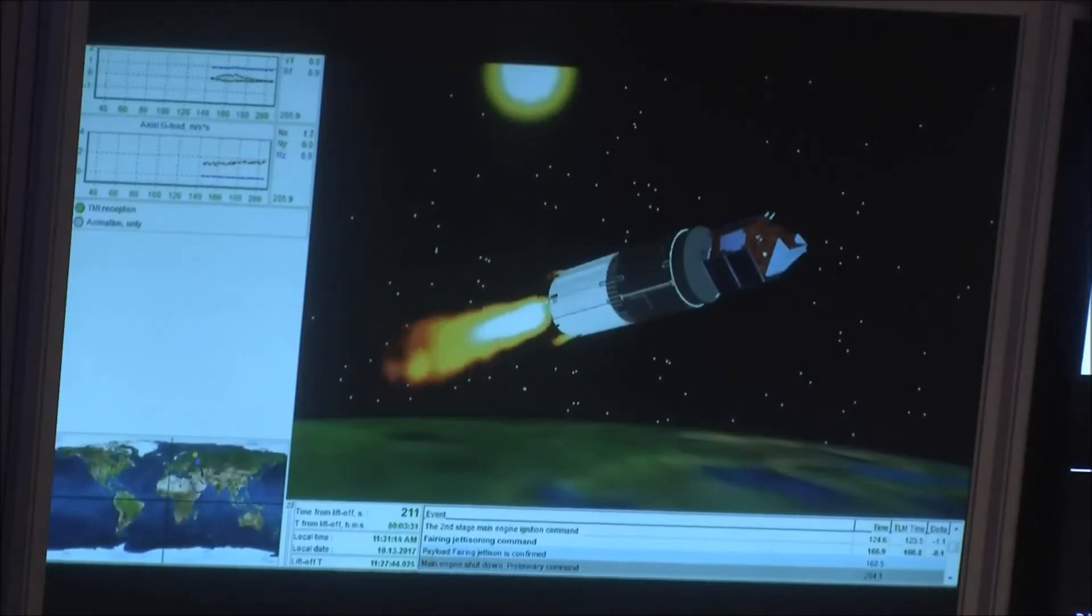And here, just for anybody who's unfamiliar with a launch, what you're looking at is the remainder there on the left-hand side of the launch vehicle and then on the right is the satellite, Sentinel-5P.